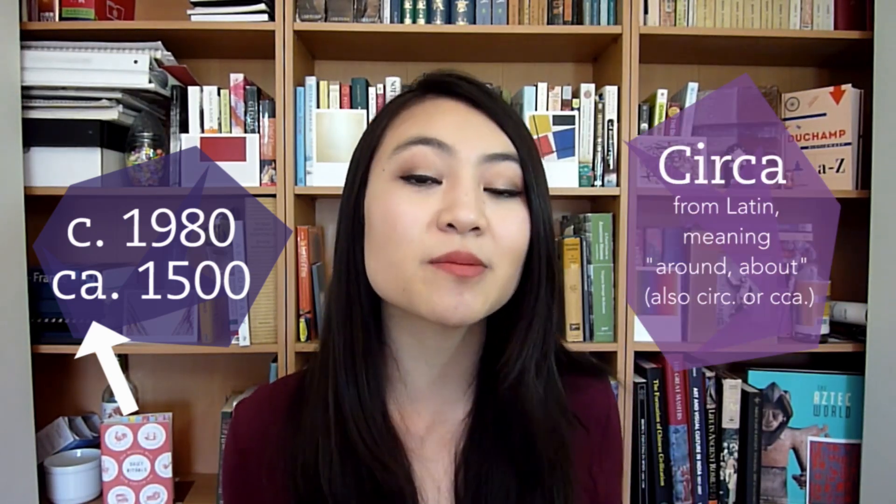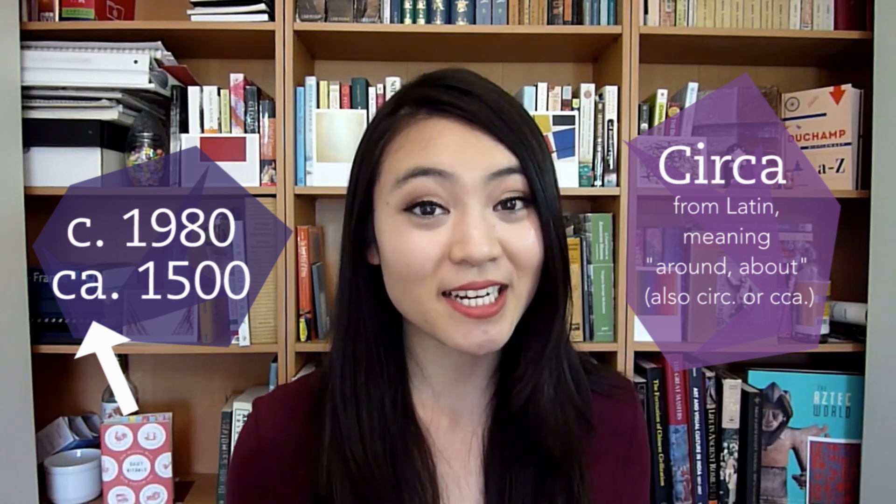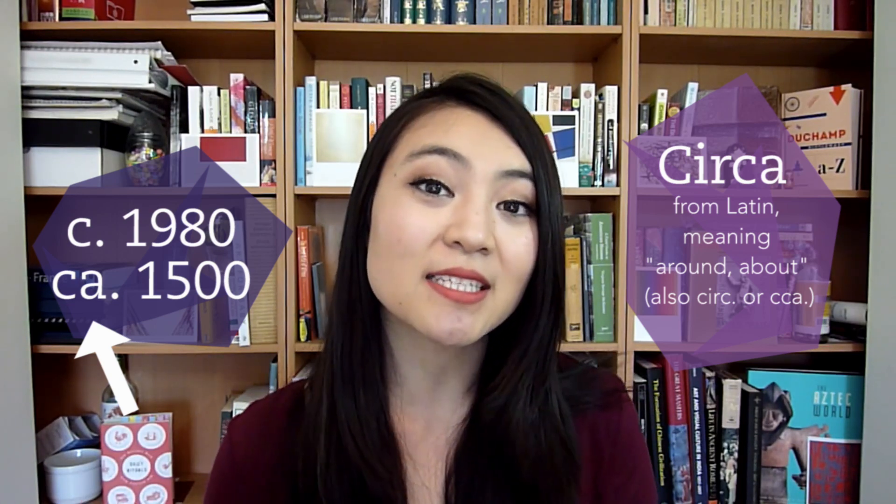What about that little C or CA in front of a date? That's actually an abbreviation for the Latin word circa, which means approximate. When we don't know the exact date that something was created, we use circa as a notation. It basically says: we don't know exactly when this was created, but according to our research, this is the time range that is our best guess.